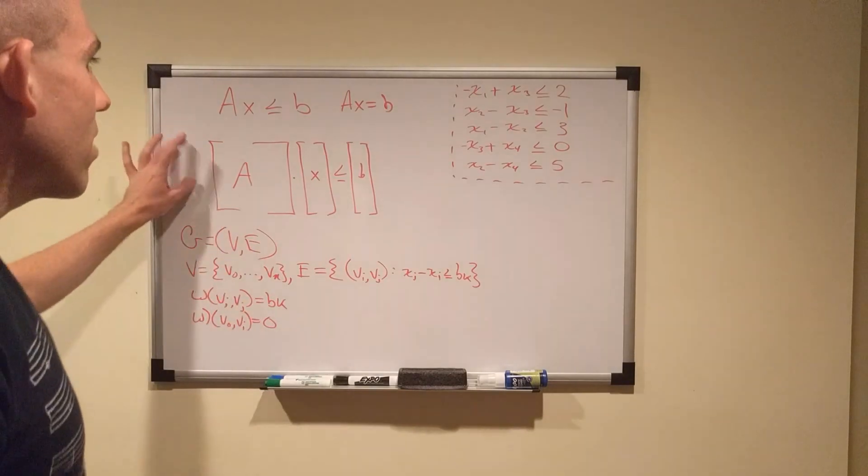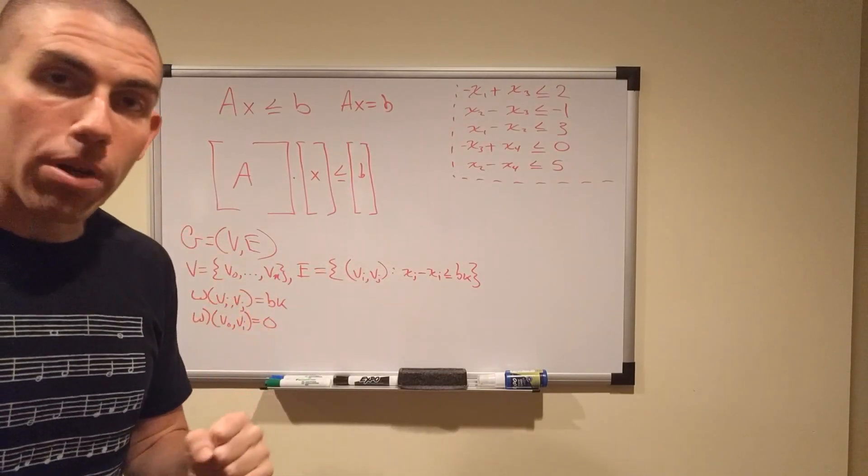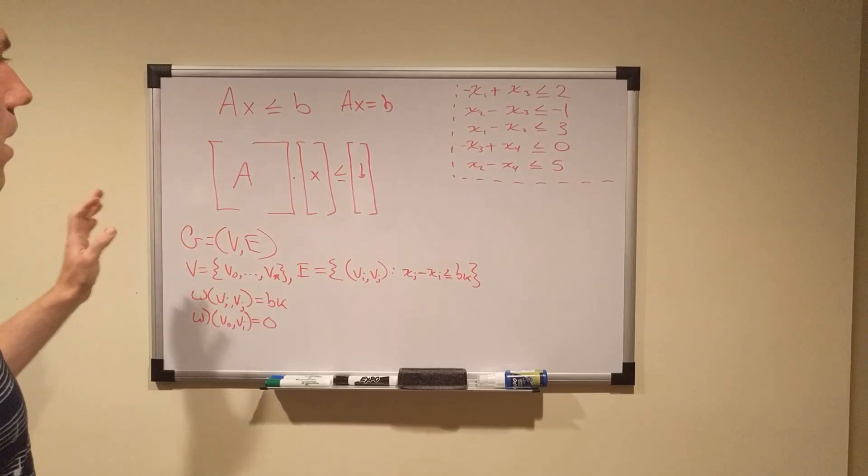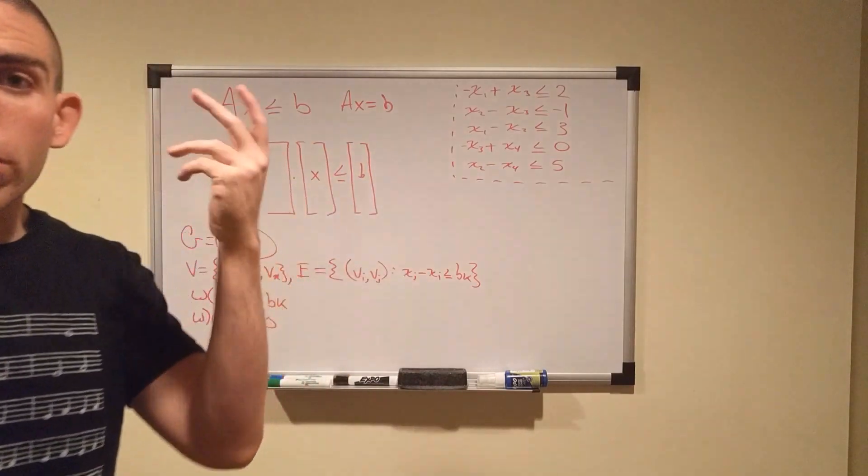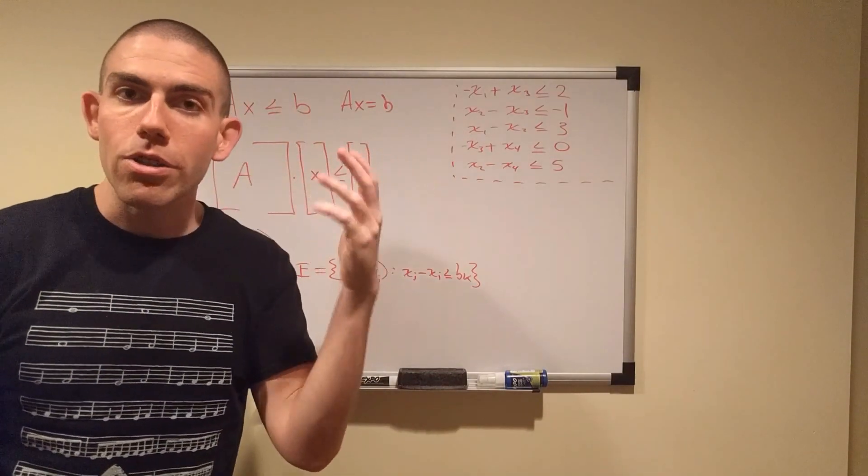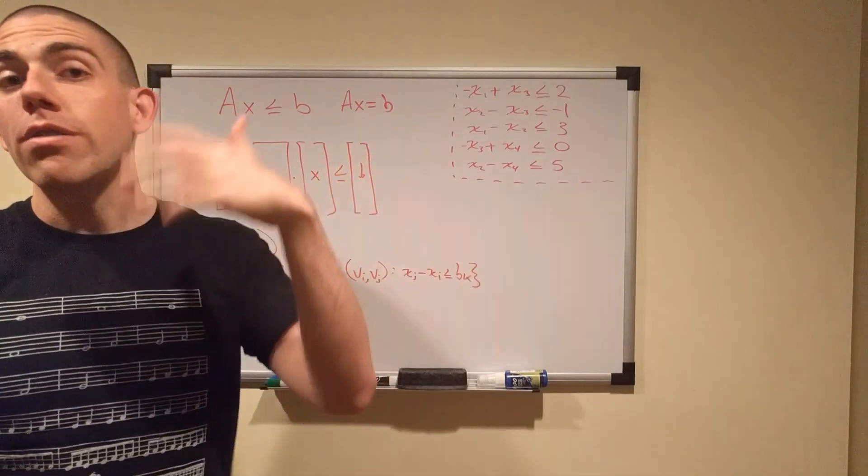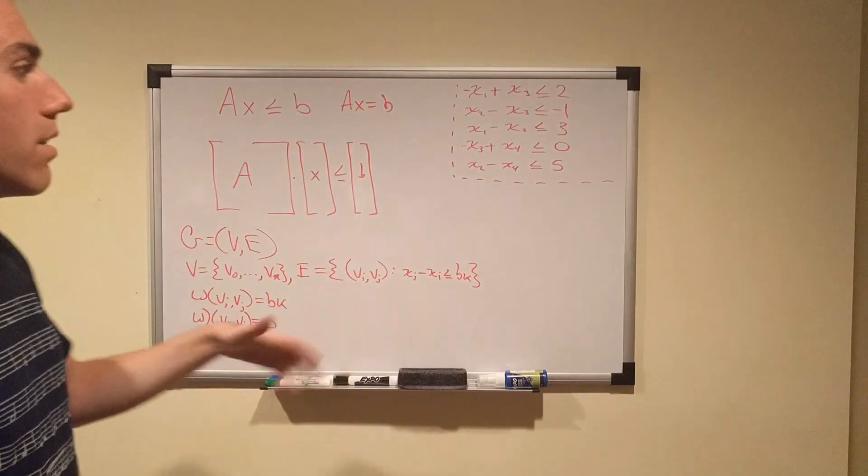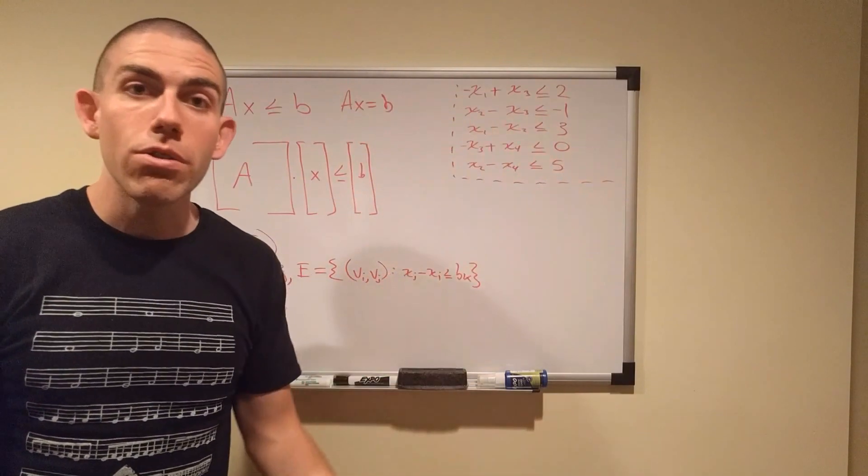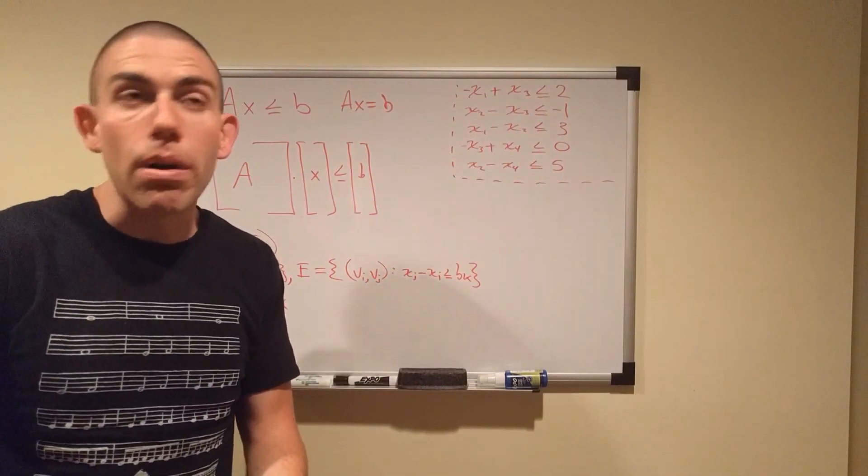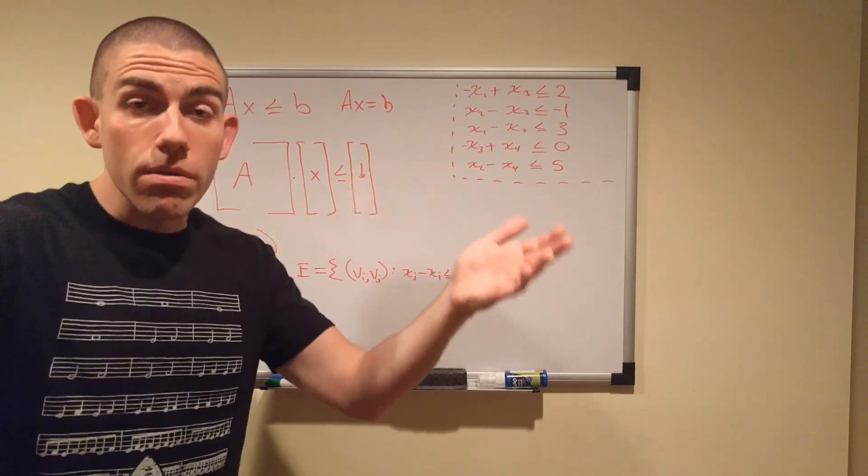So the way to tackle this, the algorithm to solve this in polynomial time, is to turn it into a graphing problem and then use a shortest path algorithm to determine the solution set. At that point, turning it into a graph is obviously polynomial in terms of the size of the input. Then whatever shortest path algorithm we use will run at the speed of that shortest path algorithm, which will be polynomial. So we'll have a polynomial plus a polynomial, which is polynomial.